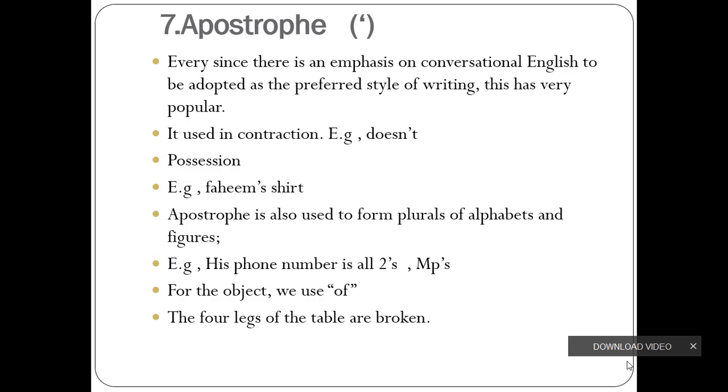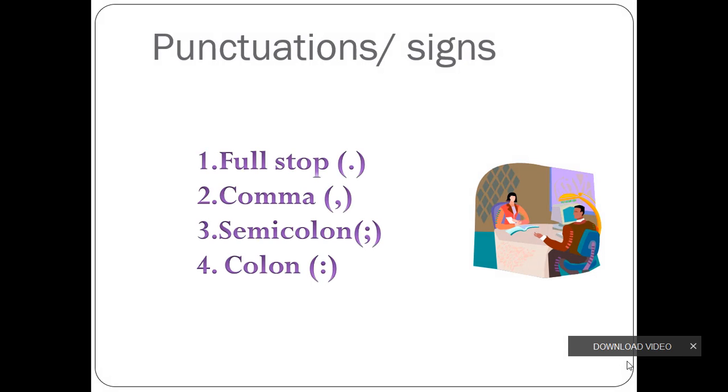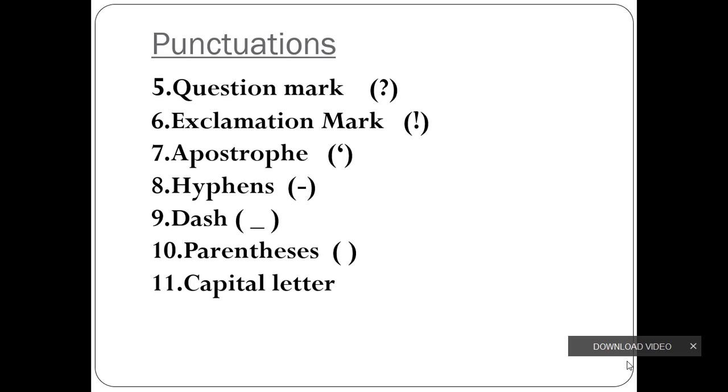So now let's discuss the punctuation marks chronologically. The first one is full stop, comma, semicolon, colon, question mark, sign of exclamation, apostrophe, hyphens, dash, parenthesis, capital letter, inverted commas.